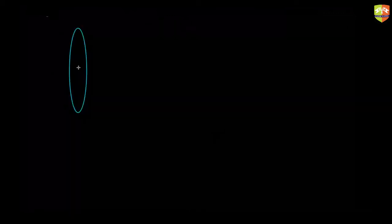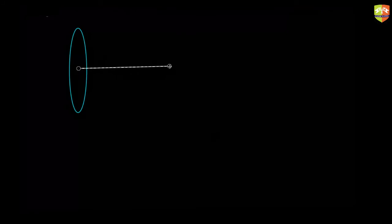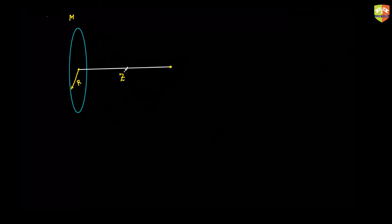Now consider a ring where half is inside the screen and half is coming out — the plane of the ring is perpendicular to your screen. The distance from the center of the ring to the point on the axis is z. The radius of the ring is R and the mass is M. You need to find the field at that axial point.